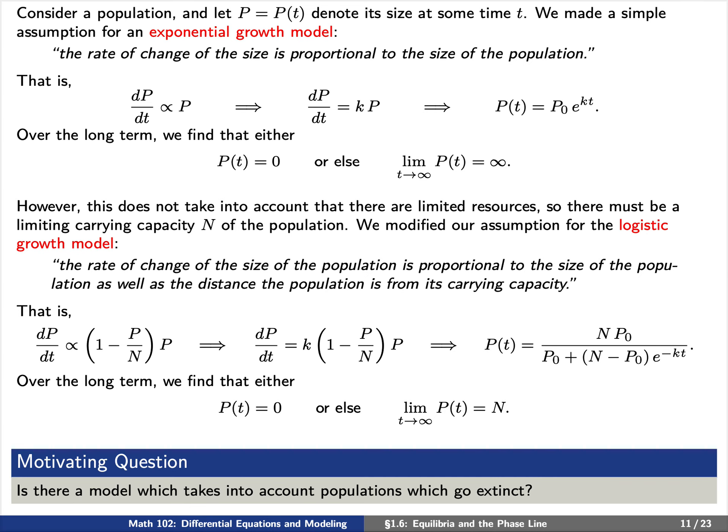We're motivated by the following question: is there a model which takes into account populations which could go extinct? In both cases above, either p(t) tends to infinity or the population tends to a carrying capacity N. But can we find a model where p(t) tends to 0? We'll discuss this today.